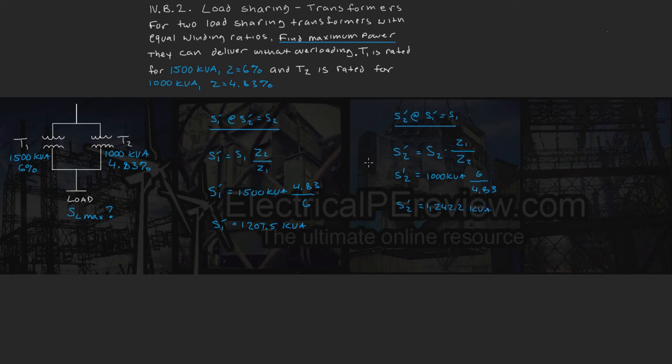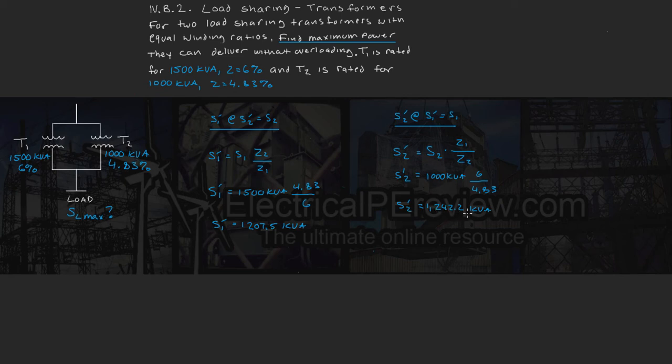Let's interpret these results. Transformer 1 outputs 1207.5 kVA when transformer 2 is at 1000 kVA — transformer 1 is not the limiting transformer because 1500 kVA is greater than 1207.5 kVA, so it's not overloaded. However, transformer 2 would output 1242.2 kVA when transformer 1 is at full load. Since 1242.2 kVA exceeds its rating of 1000 kVA, transformer 2 is our limiting transformer.